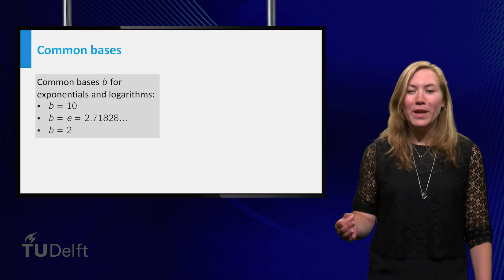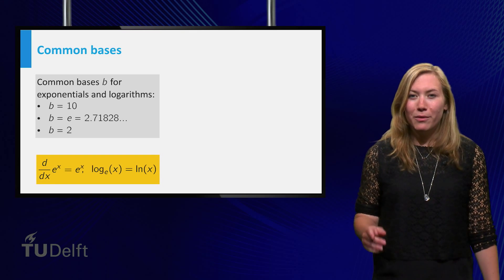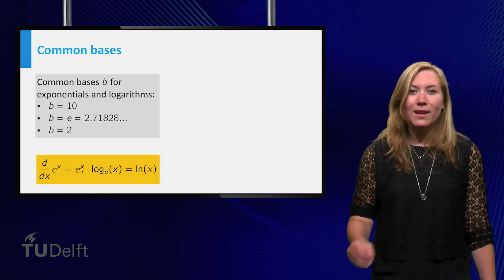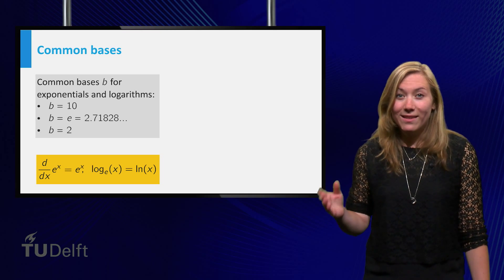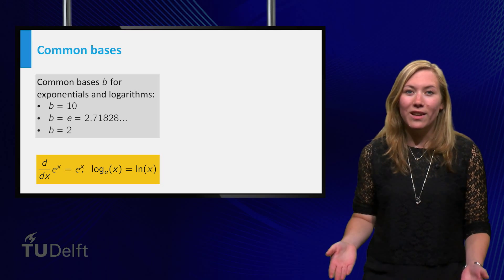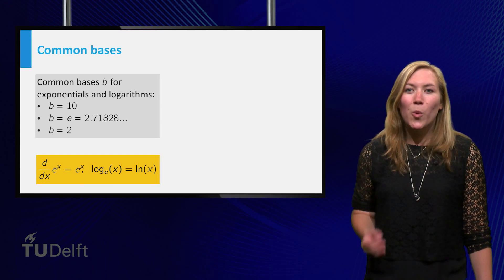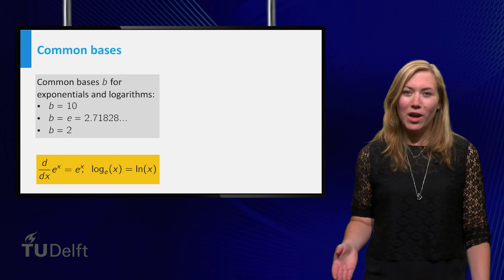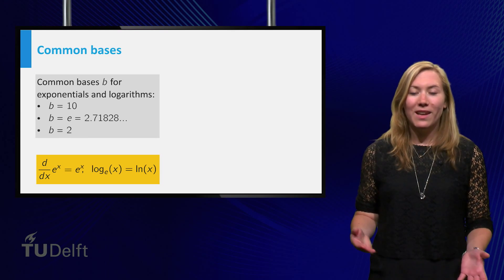The base e has the special property that the derivative of e to the power x is e to the power x itself, which makes it very well suited for use in calculus. The logarithm with base e is called the natural logarithm and is usually written as ln.